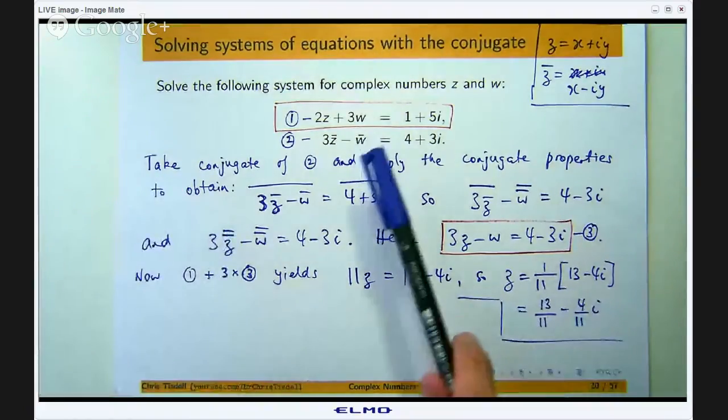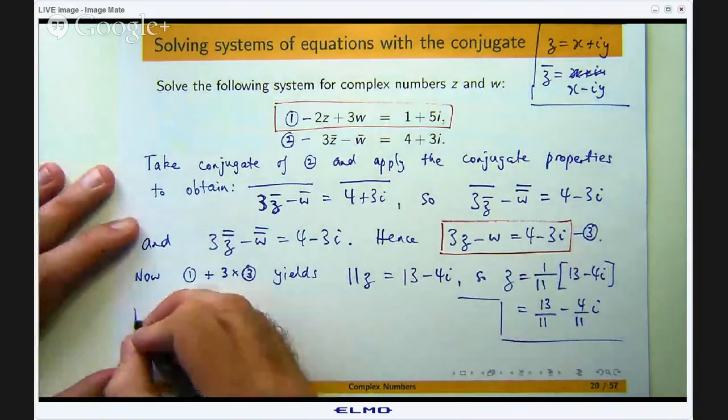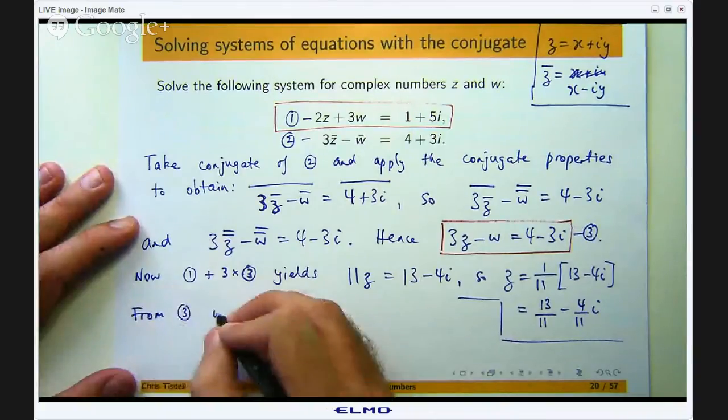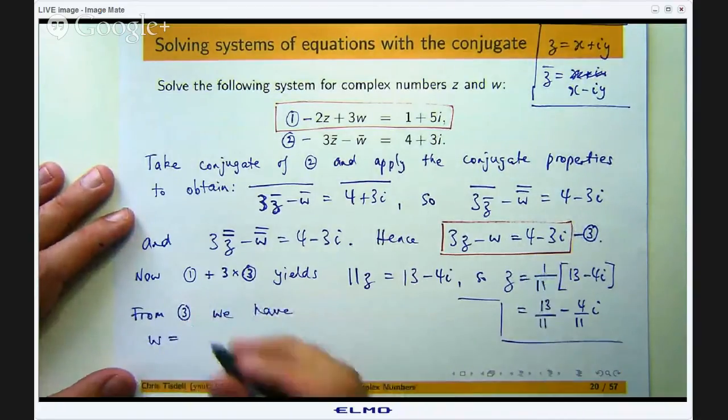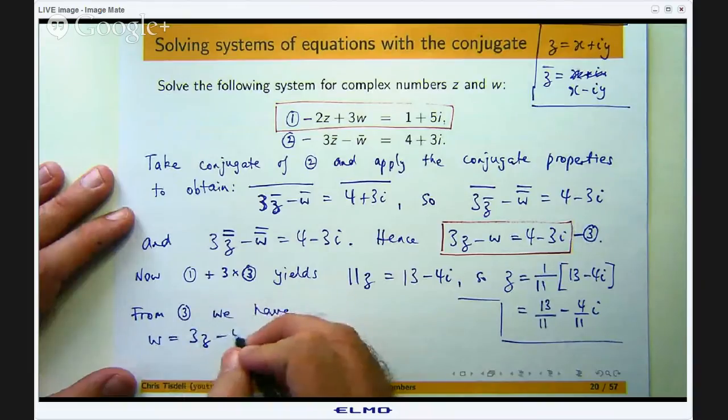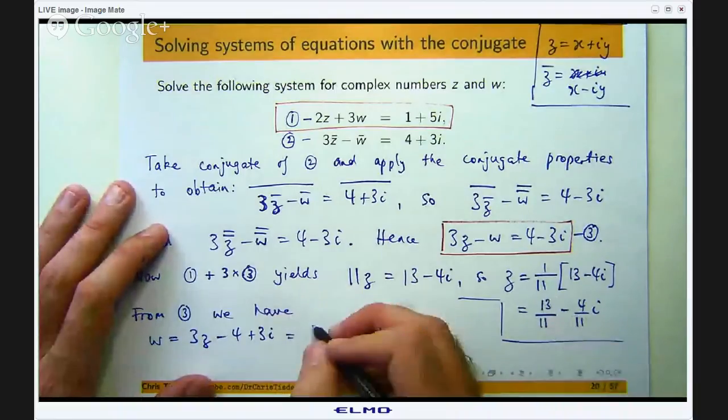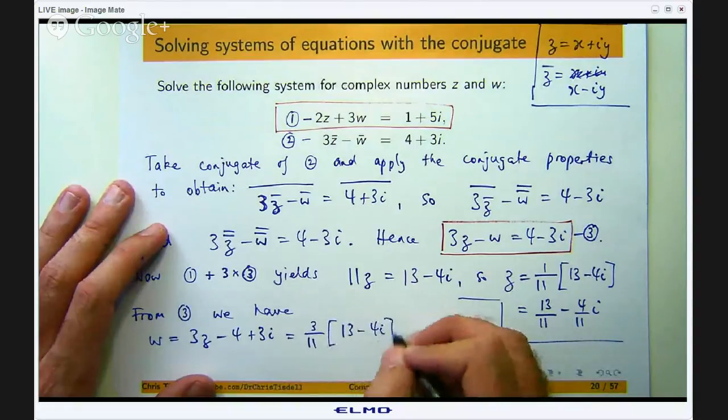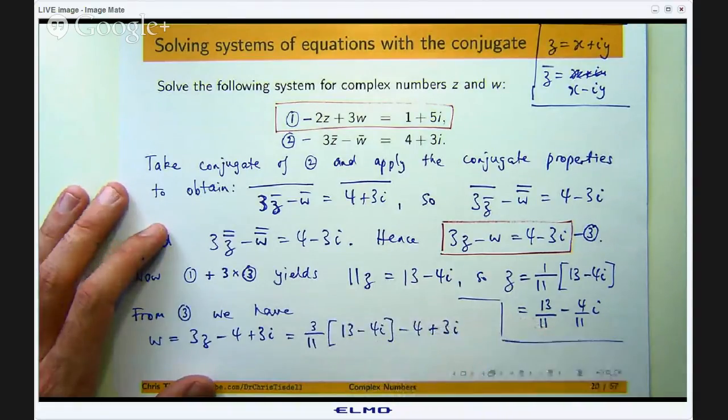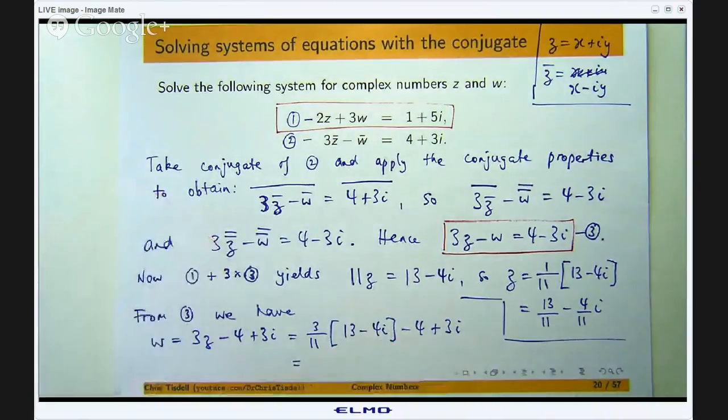Now I can back substitute to get my w, in fact I can get it from here if you like. Just isolate the w and then we can work out what w is. Okay so w is going to be 3z minus 4 plus 3i. So if you want to expand this and add the real parts and add the parts involving the i and then you will get something like this.